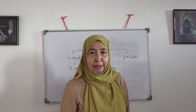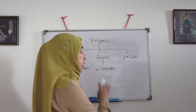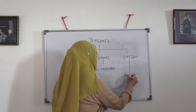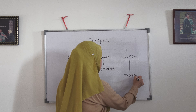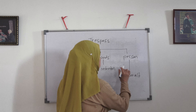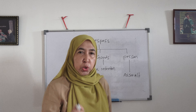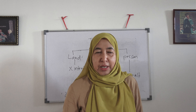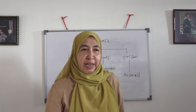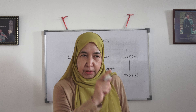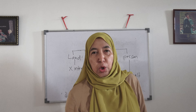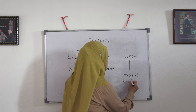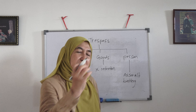There are three types of trespass: trespass to land, trespass to goods, and trespass to person. For trespass to land, we do not require intention. Remember we discussed earlier in the introductory part about intentional and unintentional torts — in respect of trespass to land, we don't have to prove intention.